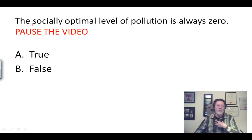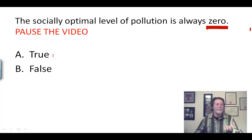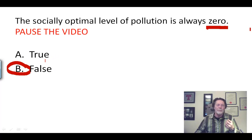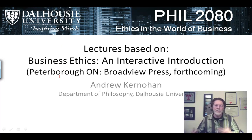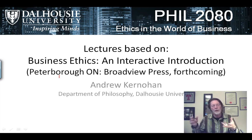Here is a question for you: the socially optimal level of pollution is always zero — true or false? Well, as you saw in that diagram, the socially optimal level of pollution is not zero; it would seldom be zero. It's usually almost always above zero, and that's what duty-based and rights-based people have complained about. So that is a brief introduction to the environmental economics field, and we'll come back to look at applications through cost-benefit analysis, discounting the future, and the ethical problems involved.